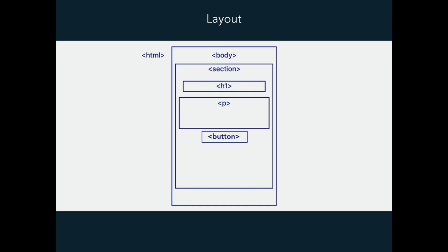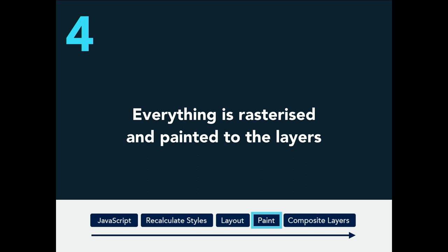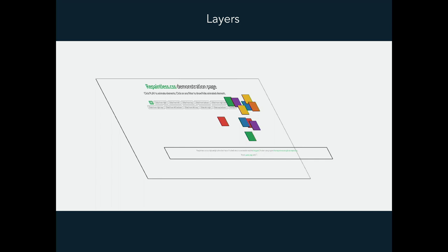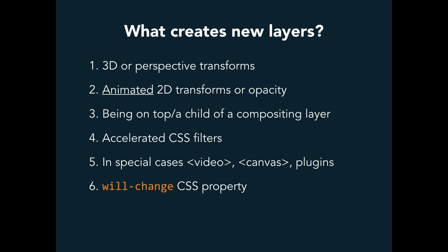Once we know where elements are positioned, everything is rasterized and painted to layers — we now have pixels. Think of layers like layers in Photoshop: if you have two things on different layers you can move them independently without affecting each other, but if they're on the same layer they're glued together. By default the browser has everything on one layer, but certain things create additional layers — like 3D or perspective transforms, animated 2D transforms, opacity animations, or elements that are children of an existing layer.